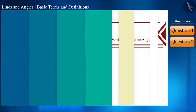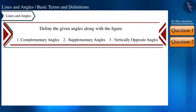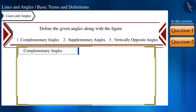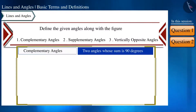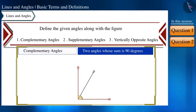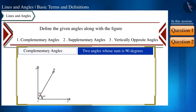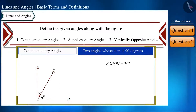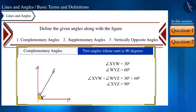Now let's define complementary angles. If the sum of two angles is 90 degrees, we call them complementary angles. For example, in angle XYZ, the measure of angle XYW is 30 degrees and the measure of angle WYZ is 60 degrees. Adding these gives 90 degrees, so they are complementary.